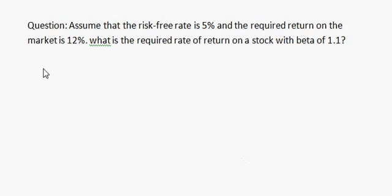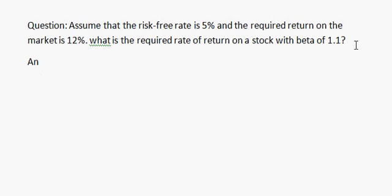Hello everyone, today we will learn how to find the rate of return on a stock. The question is: assume that the risk-free rate is 5% and the required return on the market is 12%, then what is the required rate of return on a stock with beta equals to 1.1? Now let's work through the solution.